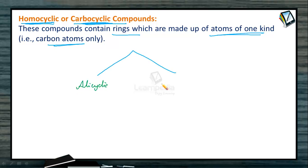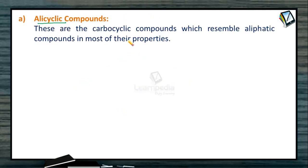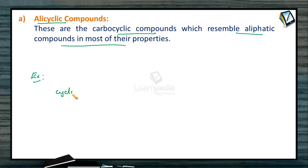Alicyclic compounds are carbocyclic compounds which resemble aliphatic compounds in most of their properties. These are cyclic compounds in which carbon atoms are linked with each other to form a closed ring-like structure. For example, in cyclopropane, three carbon atoms are linked with each other to form a ring, with the remaining positions occupied by hydrogens. Even though these are cyclic, they resemble aliphatic compounds in most of their properties.